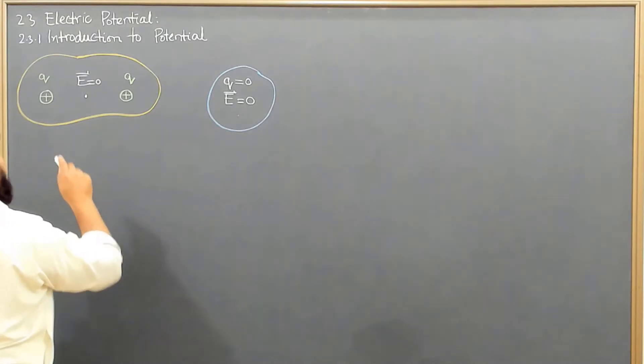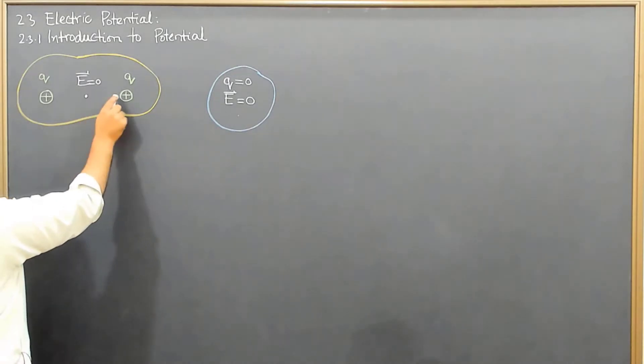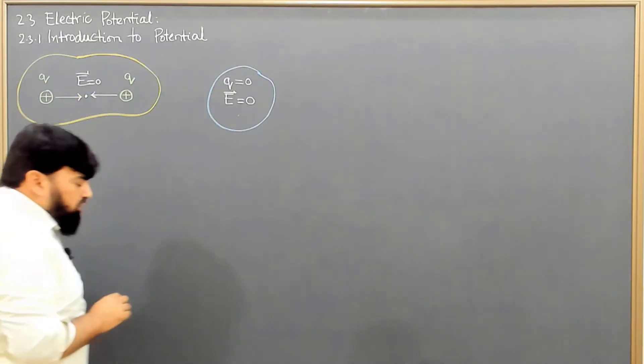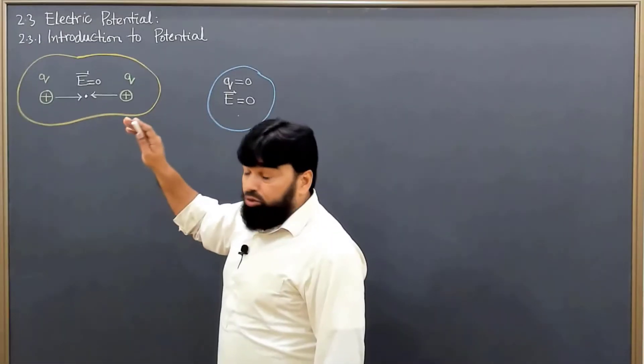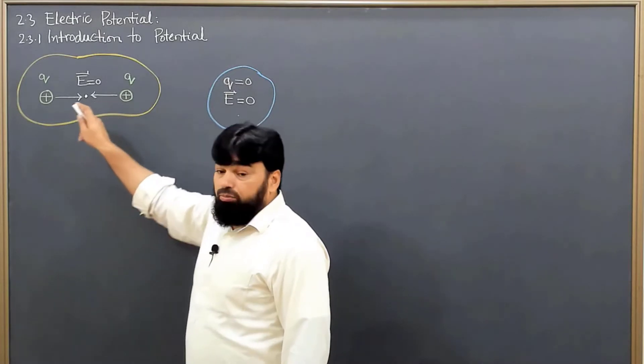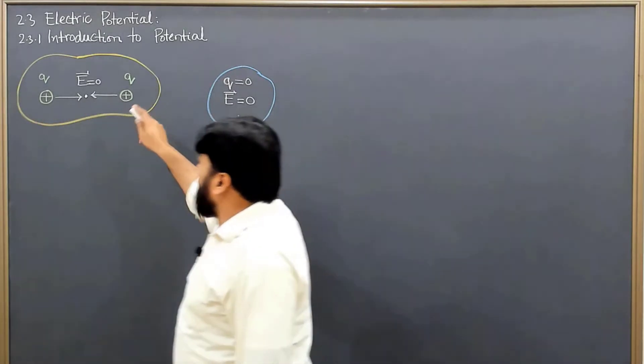And there comes the need that this one is coming out to be zero due to the reason that the two electric fields are cancelling each other due to their vectorial nature. So the concept of electric potential comes here.